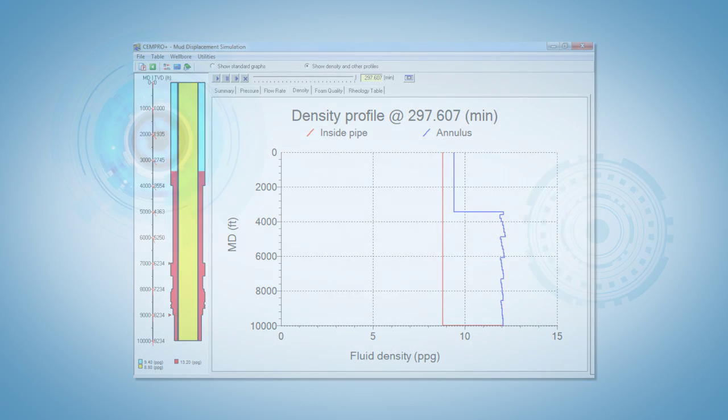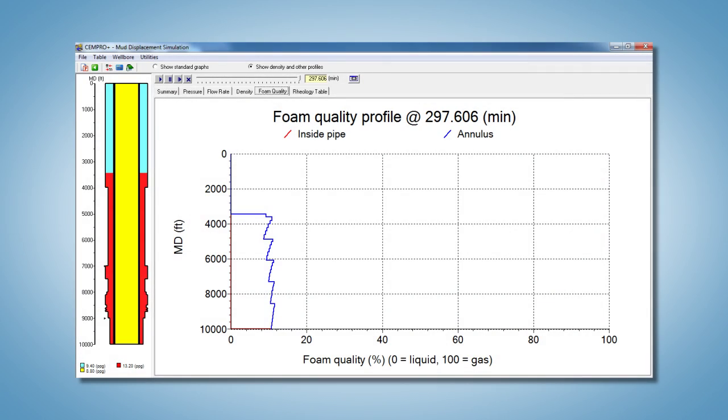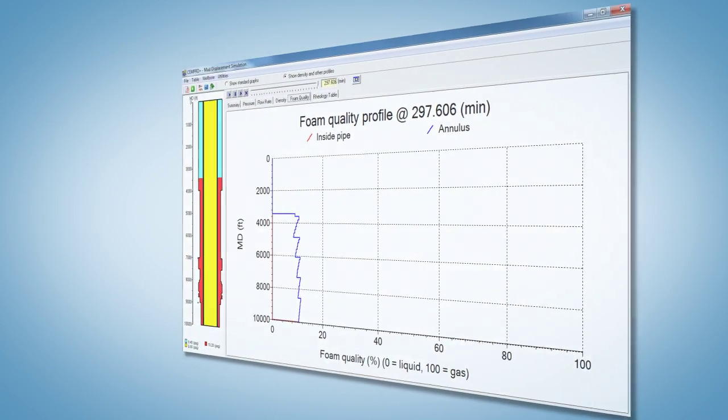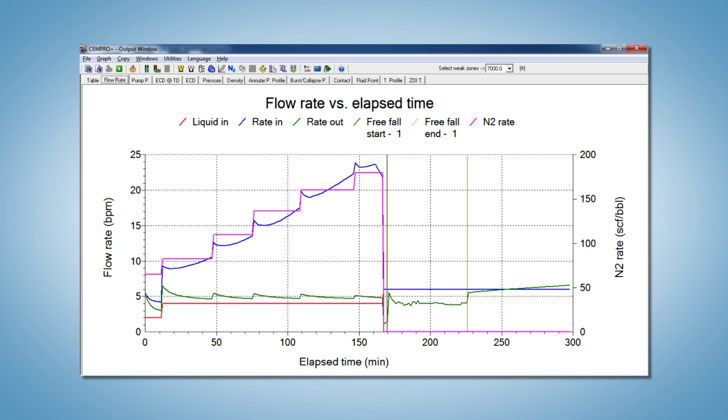The final foam quality profile shows an average of 11% as designed. The flow rate of a foam slurry is not constant along the flow path due to the compressibility of the fluid. This screen displays the volumetric injection flow rate and return rate in the annulus during the job.